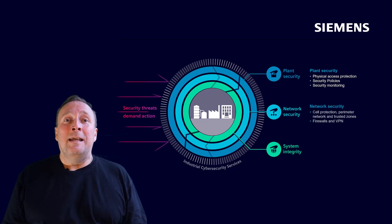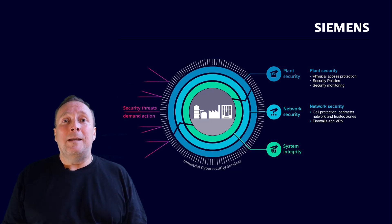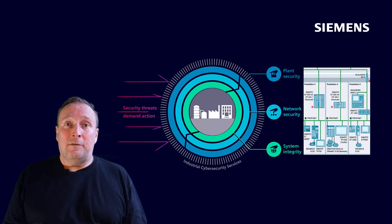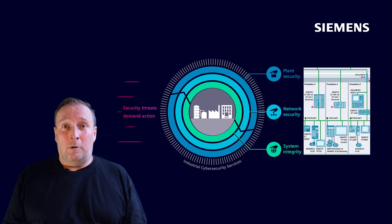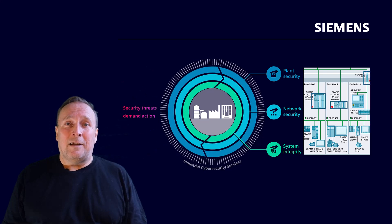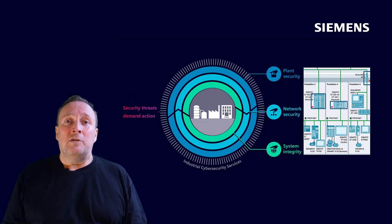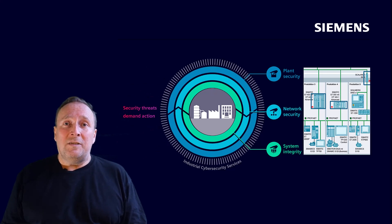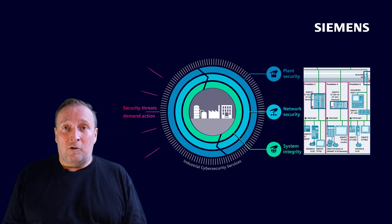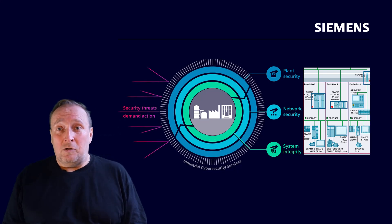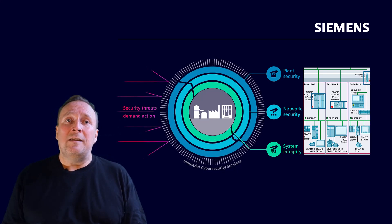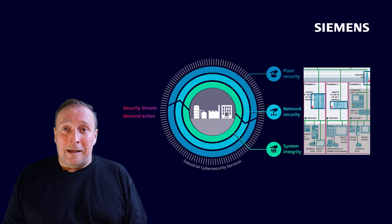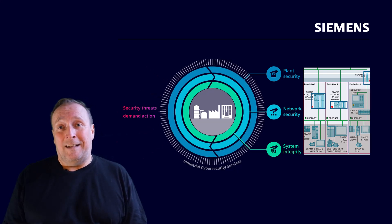Network security is implemented, for example, via cell protection. This means that individual secured cells are formed in a production network. These cells are protected by the use of special Scalance S or Simatic CP modules. Within such a cell, only the subordinate automation components — such as controllers, control panels, IOs, or Dynamics drives — communicate with each other, and are protected to the outside by the before-mentioned cell protectors.